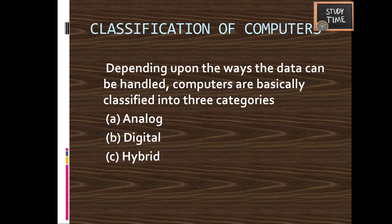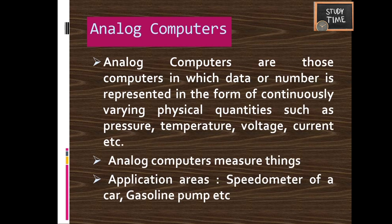Depending on how data is handled, computers are classified into three categories: analog computers, digital computers, and hybrid computers. Analog computers represent data in the form of physical quantities like pressure, temperature, voltage, and current — they measure things. They are used in speedometers, thermometers, and gasoline pumps.